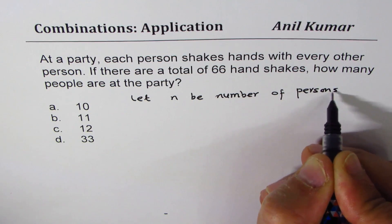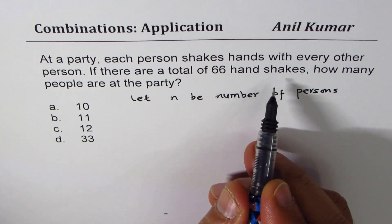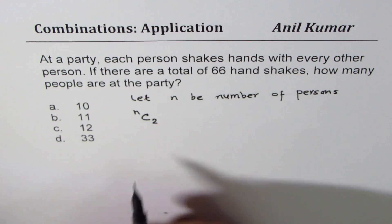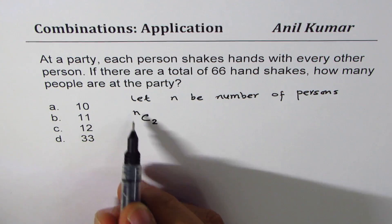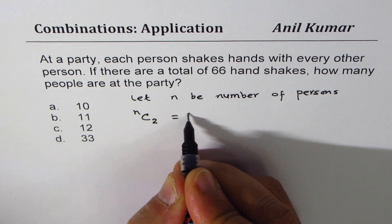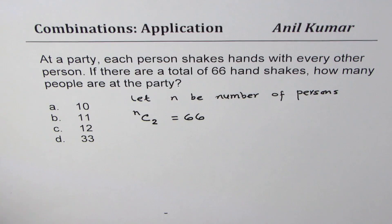Now, when we are talking about handshakes, it is always between two persons. So it is a combination of n persons taken two together. So it is nC2, whose value is 66. So that is how you could make an equation and then solve for it.